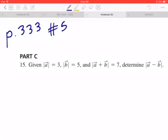Hi everyone, we're looking at number 5 on page 333. Given the magnitude of A is 3, the magnitude of B is 5, and the magnitude of A plus B is 7, determine the magnitude of A minus B.